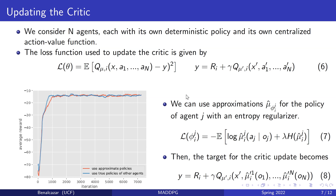The authors argue that if we cannot assume that agents have access to the policies of all other agents, they can use approximations for the other agents' policies. They use an approximation mu_phi_ij representing agent i's approximation of agent j's policy, with an entropy regularizer. The target in equation six becomes equation eight, and they analyze this and show there is no difference in average reward.